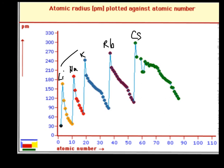So you can see as we go here, this would be the group trend. As you go down the group, they're getting bigger. And then as you go across the period, they get smaller.